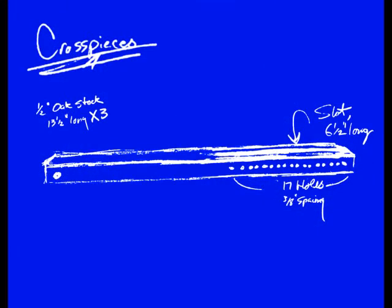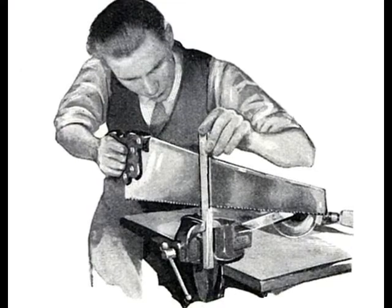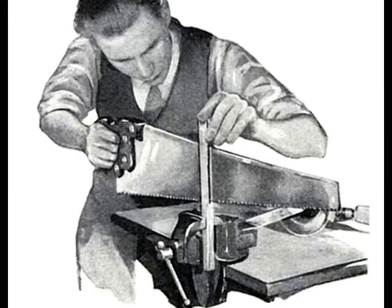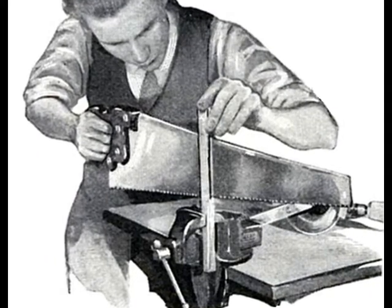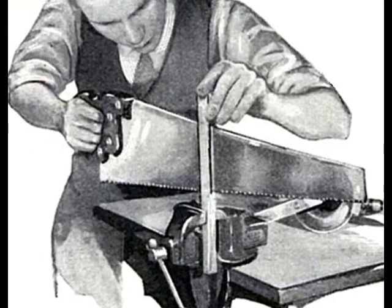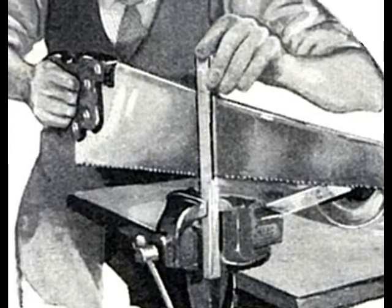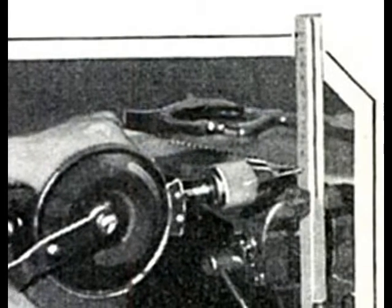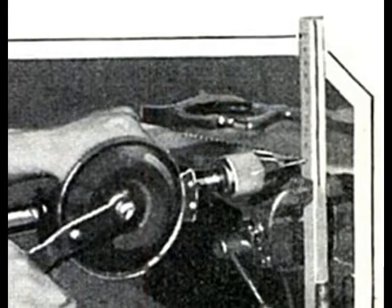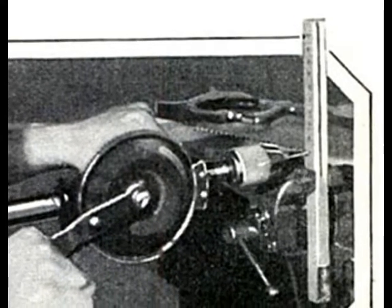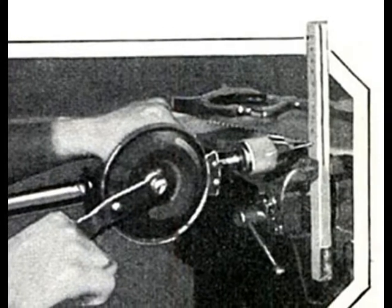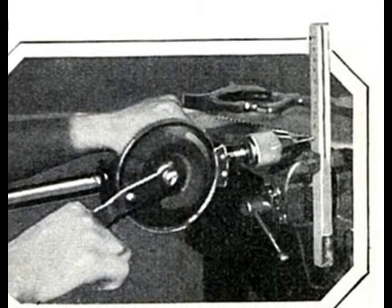The three cross pieces are roughly thirteen and a half inches long. First, you stand it on end and saw a slot into it, roughly six and a half inches inward. Then flip it over and drill seventeen holes from the bottom of the stick up to the end of the saw slot, spaced about three-eighths inches apart. At the opposite end, drill a larger hole that goes into the centerpiece clincher assembly.